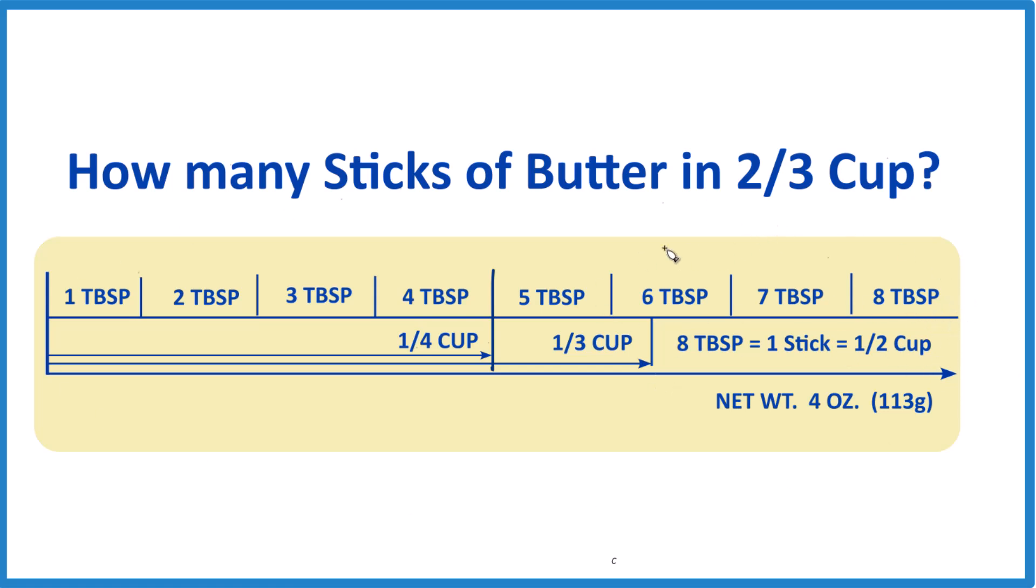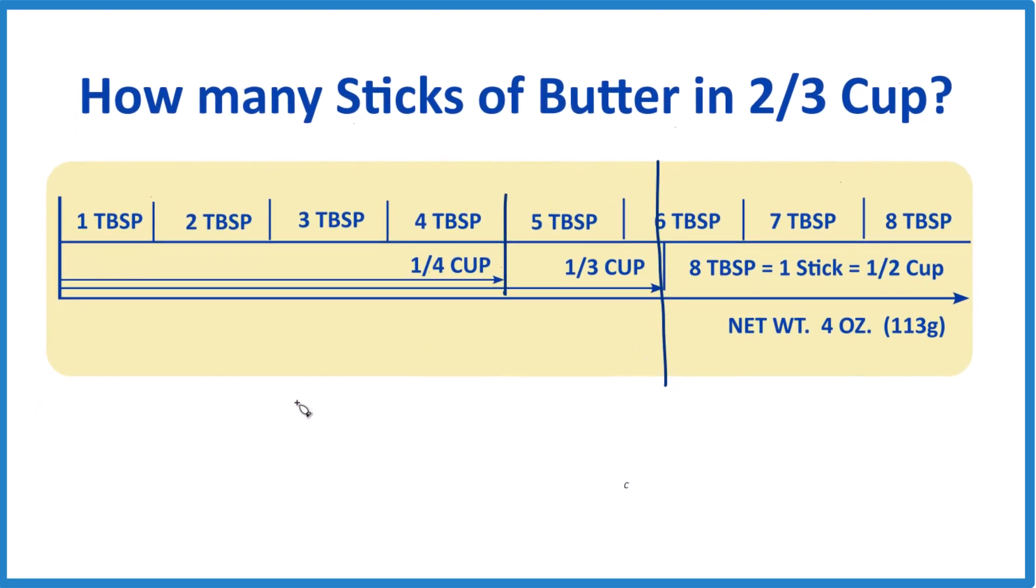The way I would do this is I would probably take and cut right down this line here. All of this is one-third cup. That would give me one-third cup. Then I'd take another stick of butter out of the fridge and cut that one into a one-third cup. So, now I have one-third plus one-third. That would give me my two-thirds cups there.